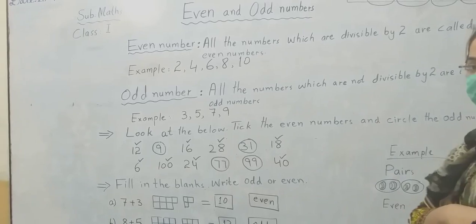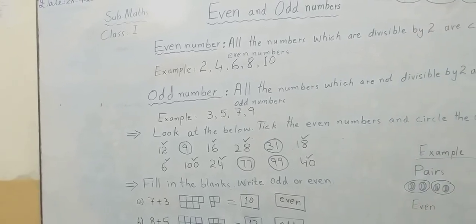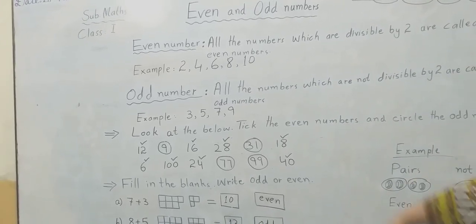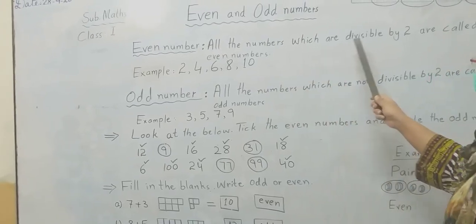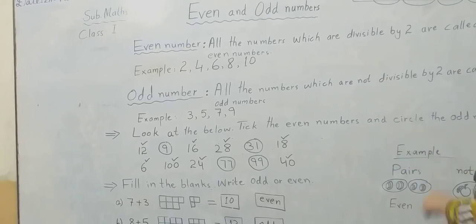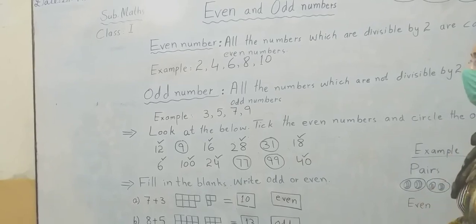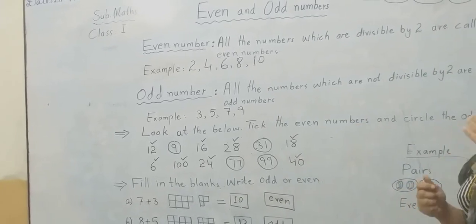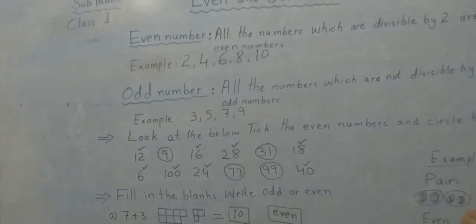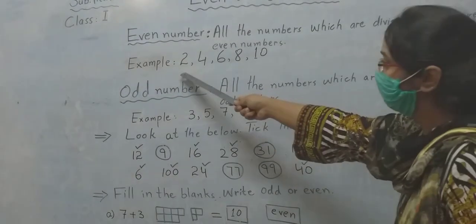I have also told something about even and odd numbers in my previous lectures. Let's have an introduction of even numbers. All the numbers which are divisible by two are called even numbers. They can not only come in the table of two, but you may also find them in the tables of four, six, eight, and ten. Here are the examples of even numbers.